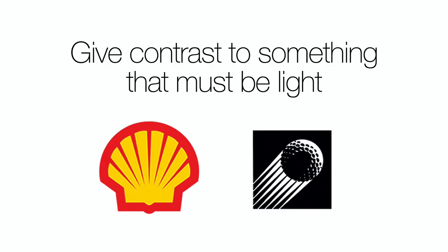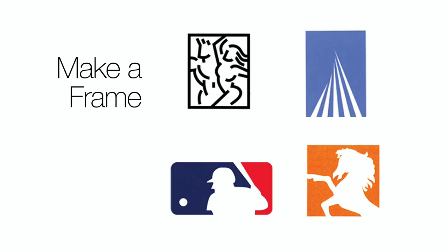Lack of contrast in the body of the Shell logo is saved by the darker red containment. On the right, the leading edge of the white golf ball would have no contrast against a white background; the addition of zoom marks on the dark side completes the trailing edge. Containing a design can give a logical boundary or stopping place for an image, like a picture frame, as with these samples.